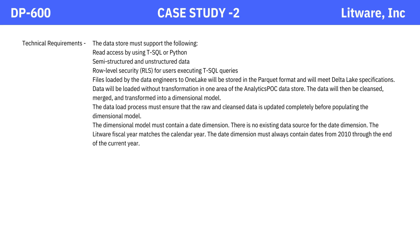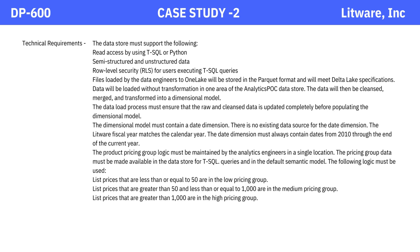The dimensional model must contain a date dimension. There is no existing data source for the date dimension. The Litware fiscal year matches the calendar year. The date dimension must always contain dates from 2010 through the end of the current year. The product pricing group logic must be maintained by the analytics engineers in a single location. The pricing group logic is: list prices ≤ 50 are in the low pricing group; list prices > 50 and ≤ 1,000 are in the medium pricing group; and list prices > 1,000 are in the high pricing group.